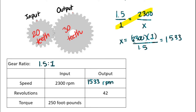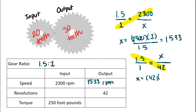For revolutions, it's the same setup as speed — input over output. Our output is 42 revolutions and the unknown is the input. X equals 42 times 1.5, which equals 63 revolutions. That makes sense: a smaller gear should spin more than a bigger gear.